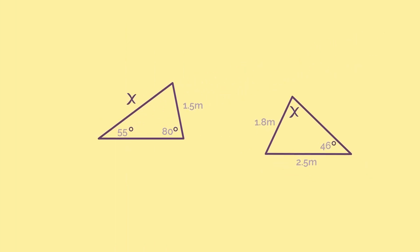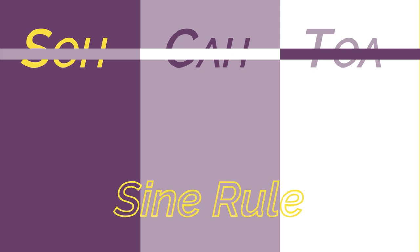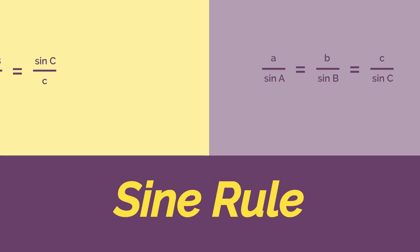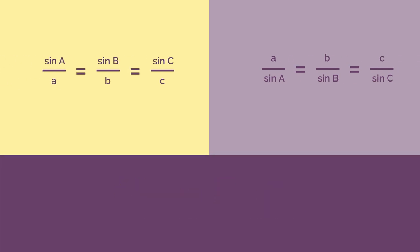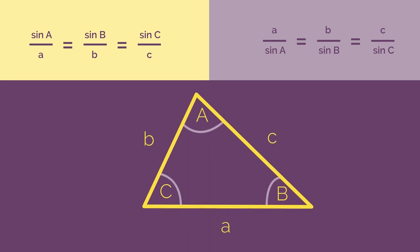As there's no right angle, we can't use SOHCAHTOA. We use the sine rule—it can be written like this or like this. The little a, b, and c represent the sides, and the capital A, B, and C are the angles.